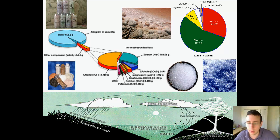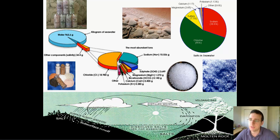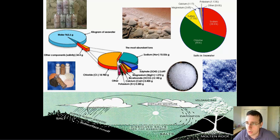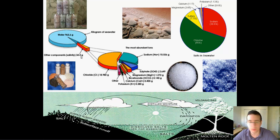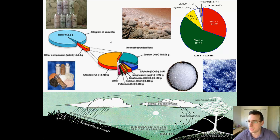When you think of the oceans, you see this big, vast, blue expanse and you think water. But actually, as much as 3.5% of that water is dissolved salt. Of every kilogram, or 1,000 grams of water, 96.5 grams will be water, and then 34.4 grams — or about 3.4% to 3.5% of the total — is salts.